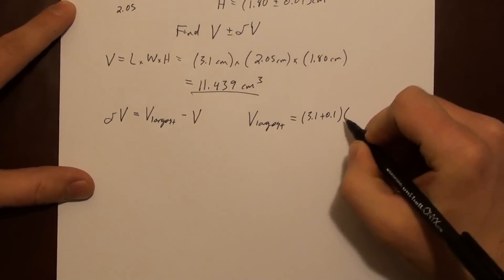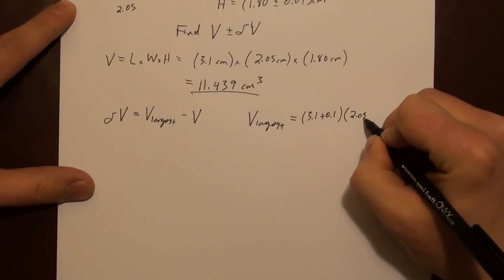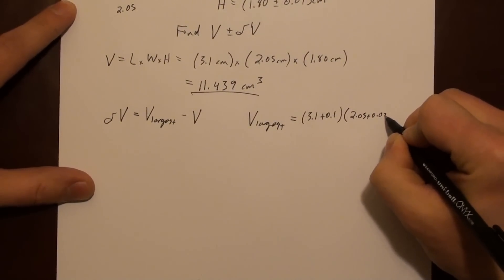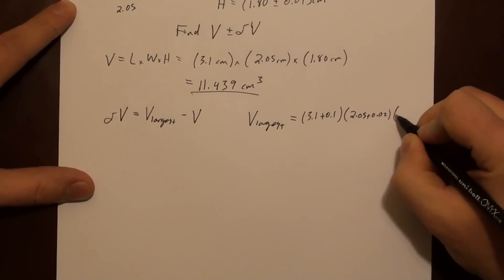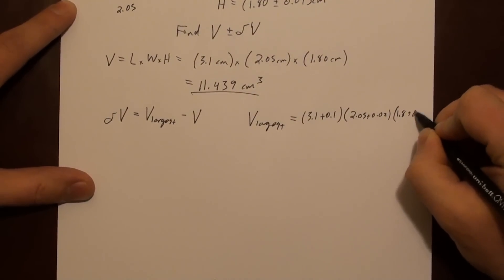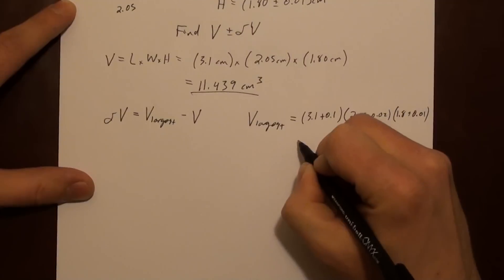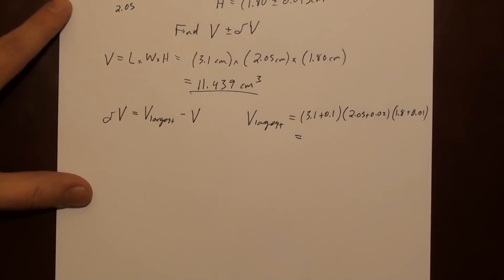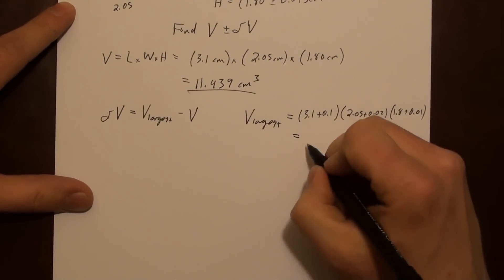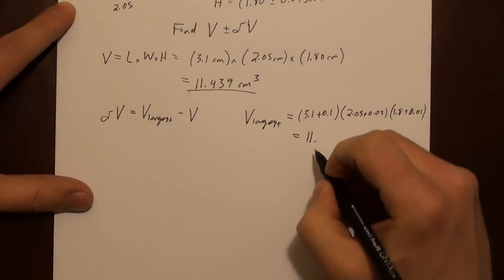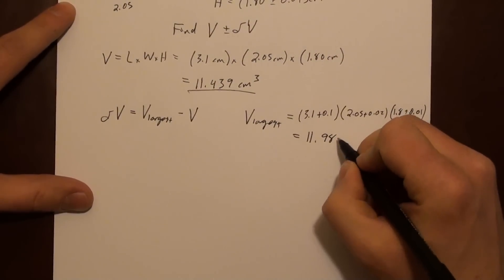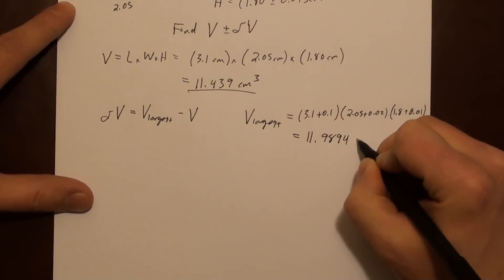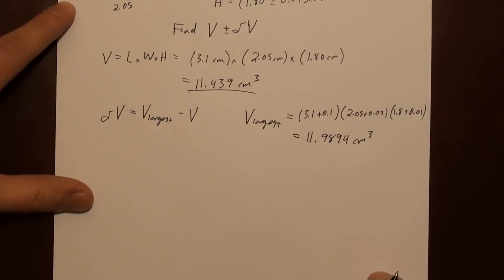So that's 3.1 plus 0.1, that's 2.05 plus 0.02, and 1.8 plus 0.01. And if you add those up and then multiply, you end up with 11.9894 cubic centimeters.